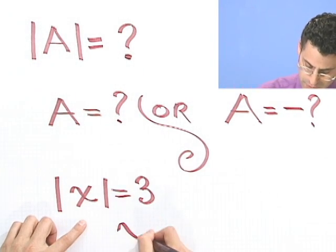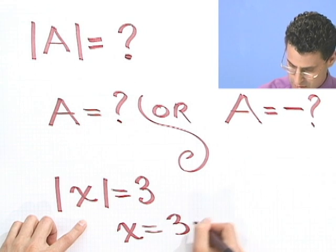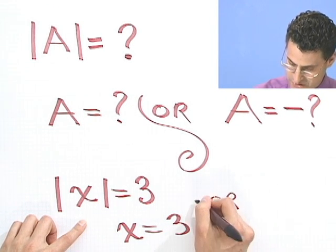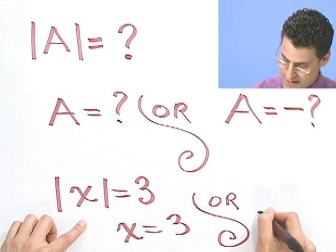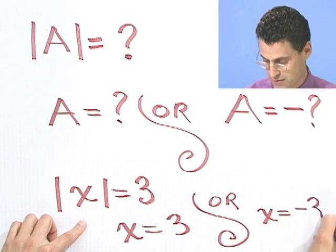You see? So either x equals 3, or, I guess I have to make that fancy little squiggle again, x equals negative 3. Do you see it? So always with absolute values, we're going to have these two equations that require to be solved.